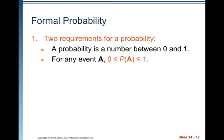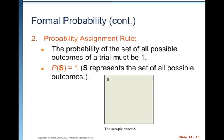Formal probability has two requirements. First, a probability is a number between zero and one: for any event A, 0 ≤ P(A) ≤ 1. Second, the probability of the set of all possible outcomes of a trial must equal one: P(S) = 1, where S represents the set of all possible outcomes. Something must occur.